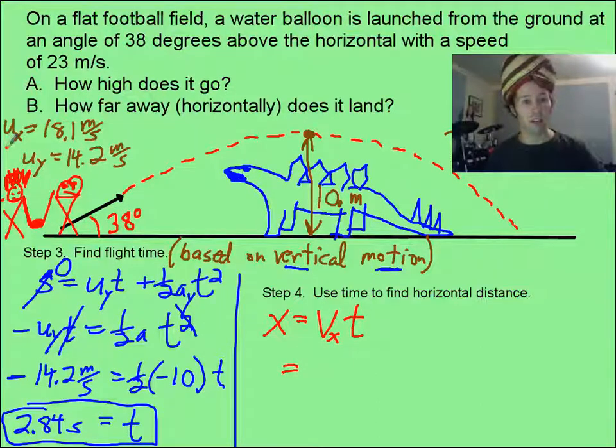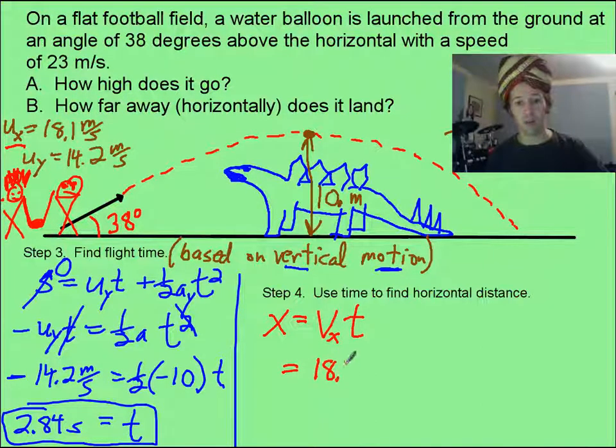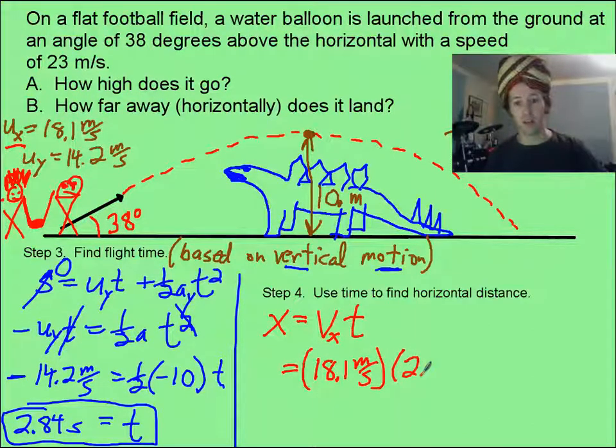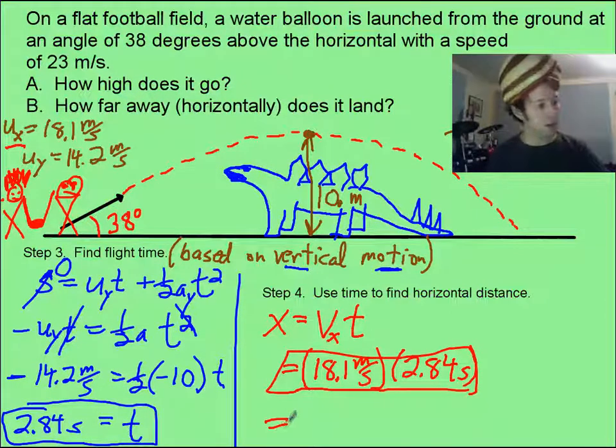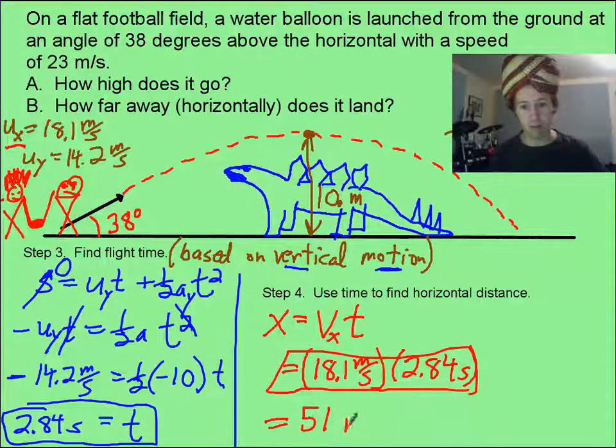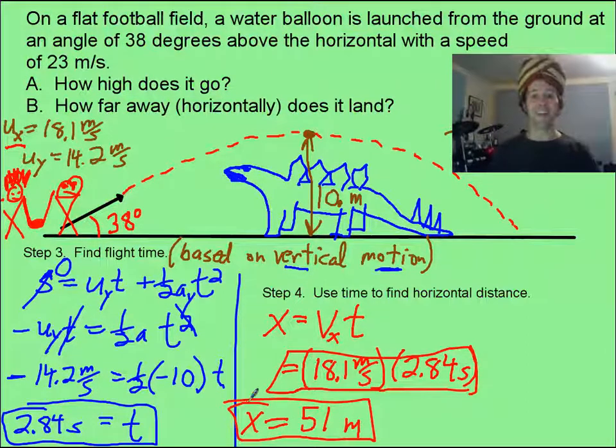And so that is a constant x-velocity of 18.1 meters per second, times our time that we got last time of 2.84 seconds. That's not quite our answer yet, and it gives us about 51 meters. How about that?